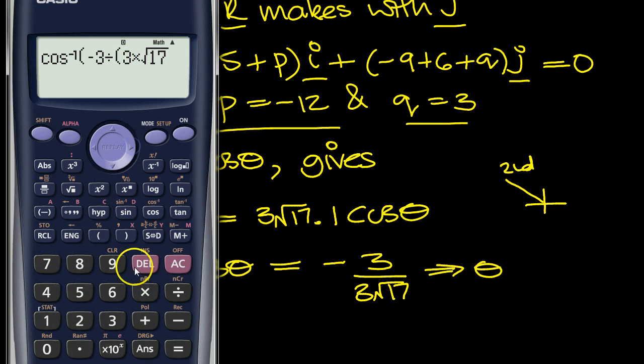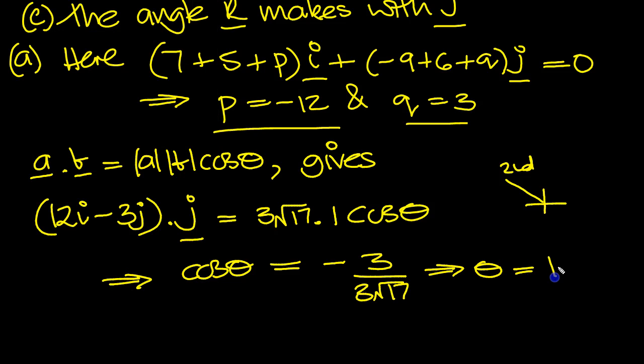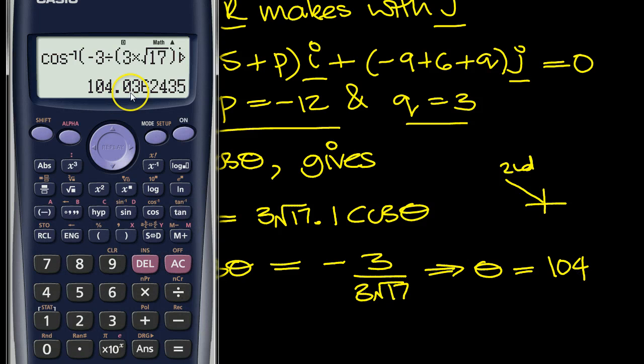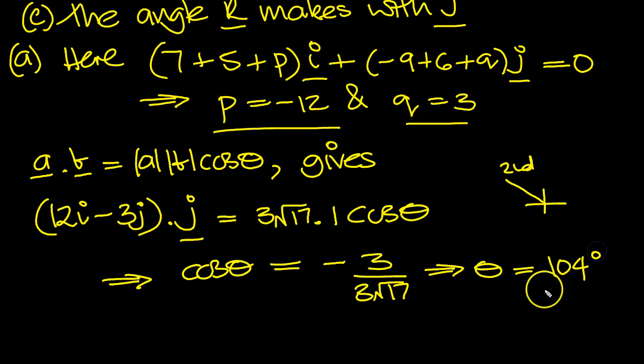Divided by bracket 3 times root 17. Outside the square root. Close the bracket. And then close the cosine, inverse cos bracket, equals 104. And to the nearest degree, it's 0.0. So it is 104 degrees.